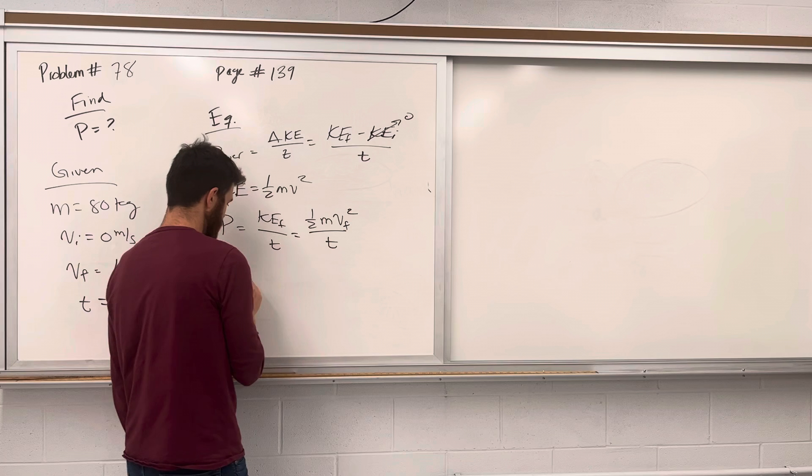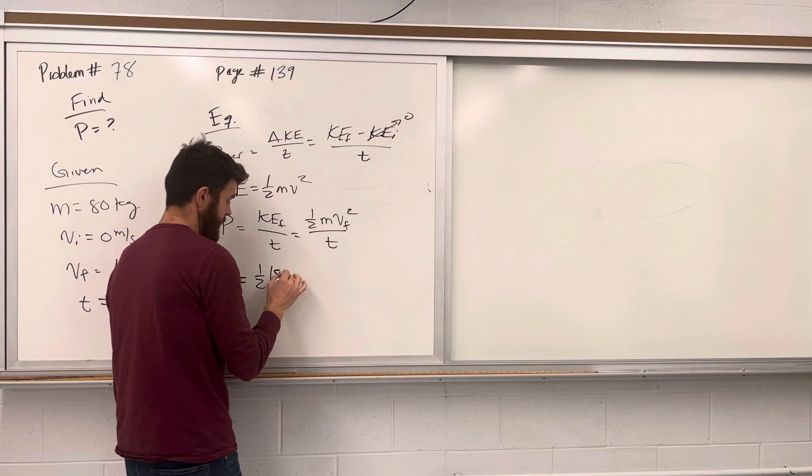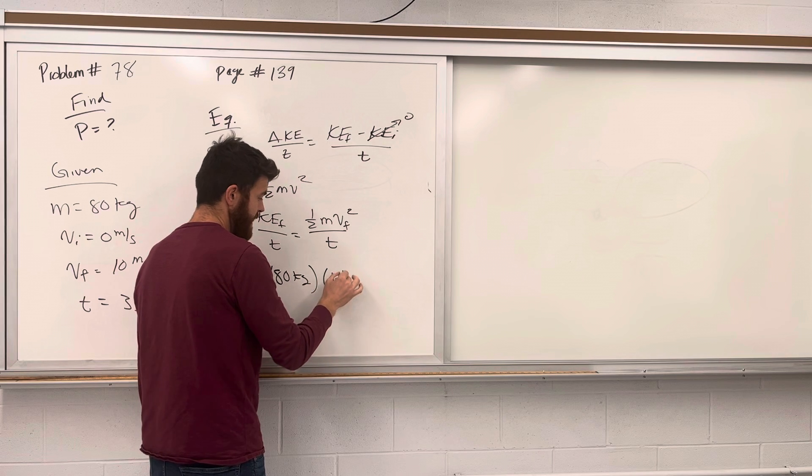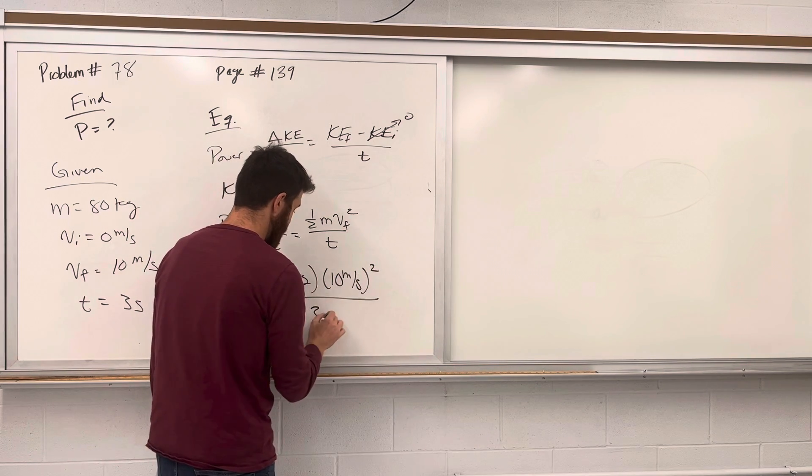Plugging in our numbers, we get one half times the mass, 80 kilograms, times our final velocity, 10 meters per second squared, divided by the time of 3 seconds.